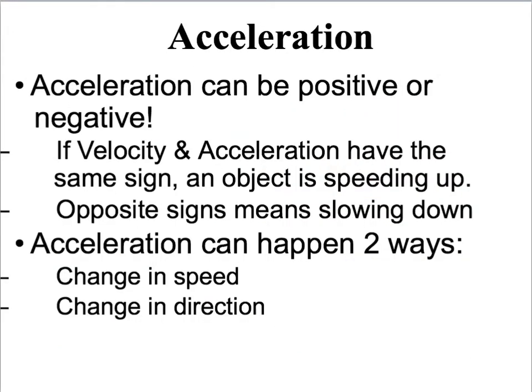A couple of things you might see as we work through problems: acceleration can be positive or negative, and it's because velocity can be positive or negative. Remember when we used our number line — if you move to the left, that was negative, and if you move to the right, that was positive. That's how you'd get a sign on velocity and acceleration.